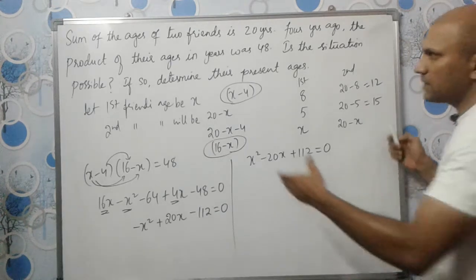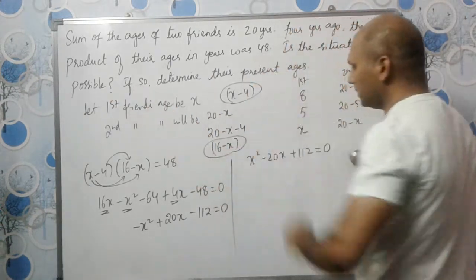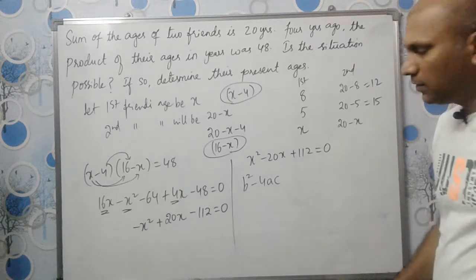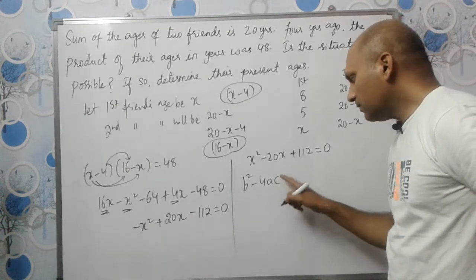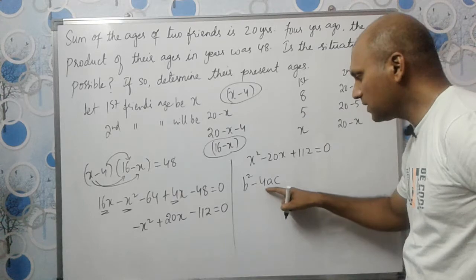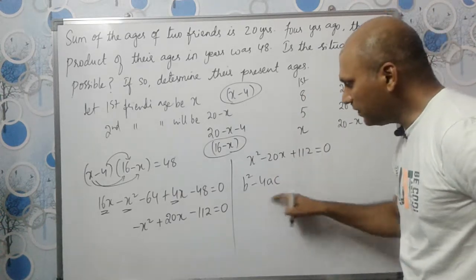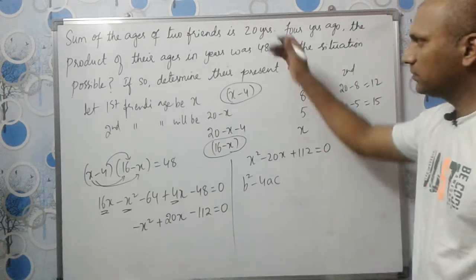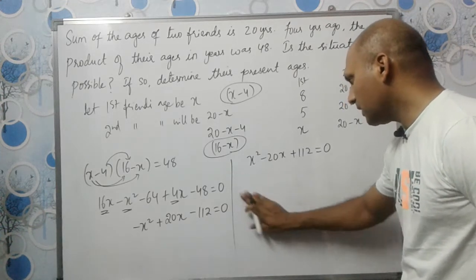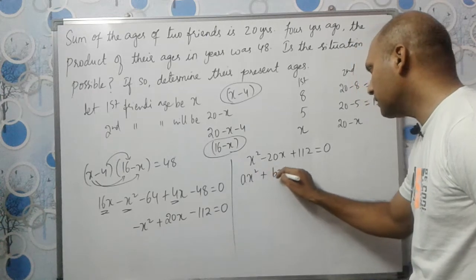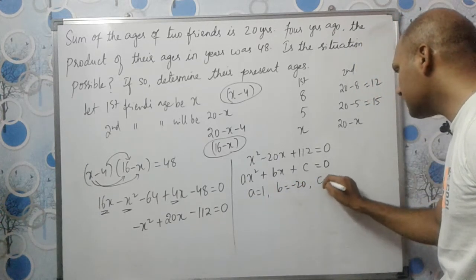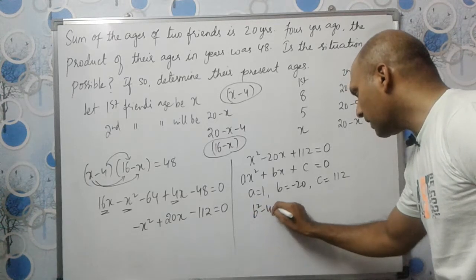Now the question asks if the situation is possible, so we need to find the discriminant first: B squared minus 4AC. If this value is greater than 0, we have two different real roots and the situation is possible. If it equals 0, it is still possible. But if it is less than 0, the situation is not possible. Comparing X squared minus 20X plus 112 with AX squared plus BX plus C equals 0, we get A equals 1, B equals minus 20, and C equals 112.